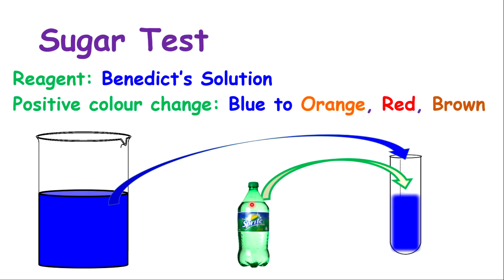Our next test is the sugar test, specifically testing for simple sugars. We've done a sugar test before, but that was for a complex sugar known as starch, and we use iodine for that. Now, we're using Benedict's solution to test for simple sugars. Benedict's solution is blue in color, and if the food contains simple sugar, it will change from blue to orange, red, or brown.